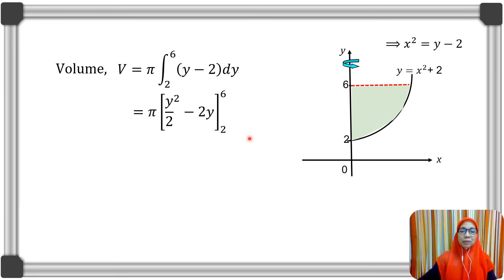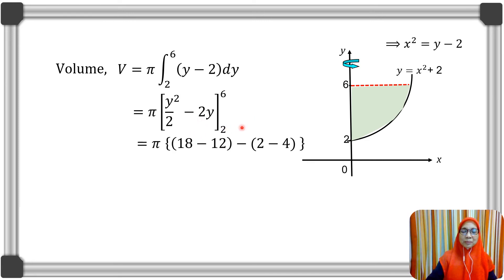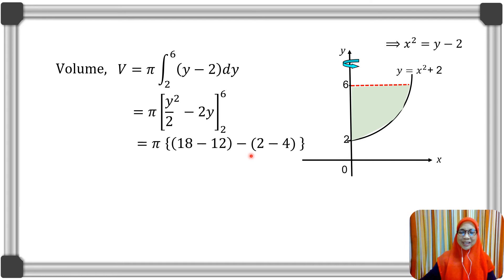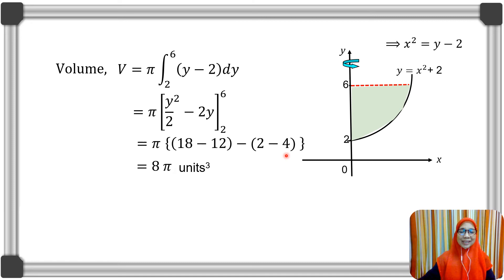Integrating, we have y²/2 - 2y. Substituting the upper limits: 18 - 12. Substituting the lower limits: 2 - 4. Thus, the volume of revolution is 8π units cubed.